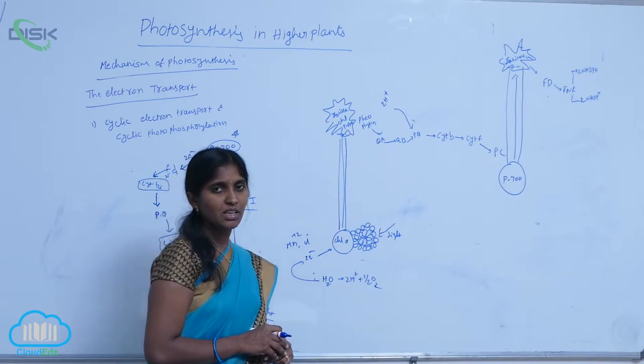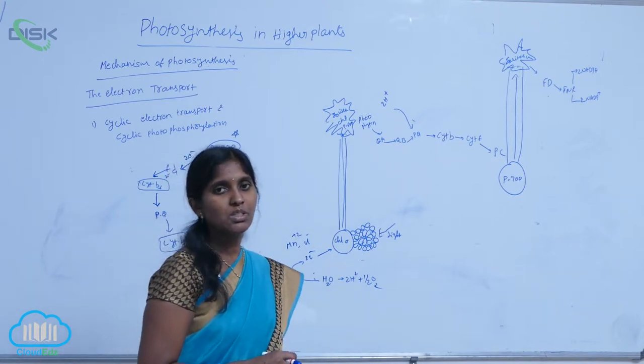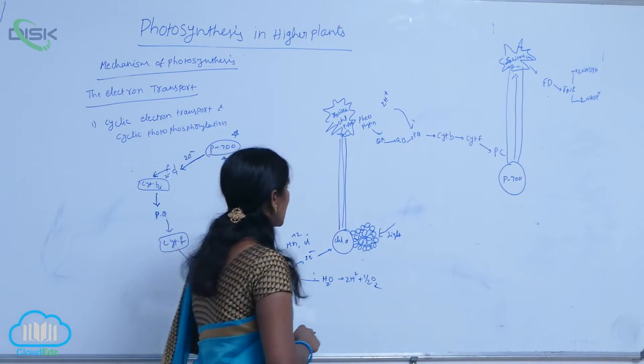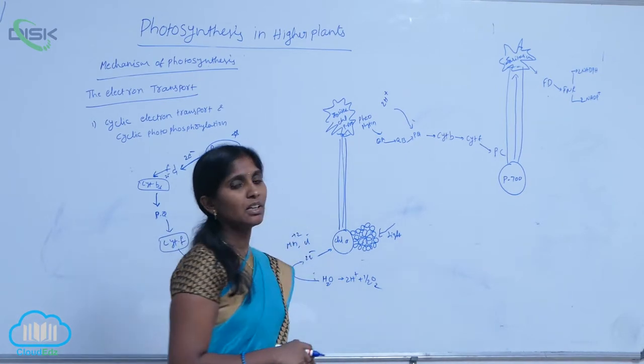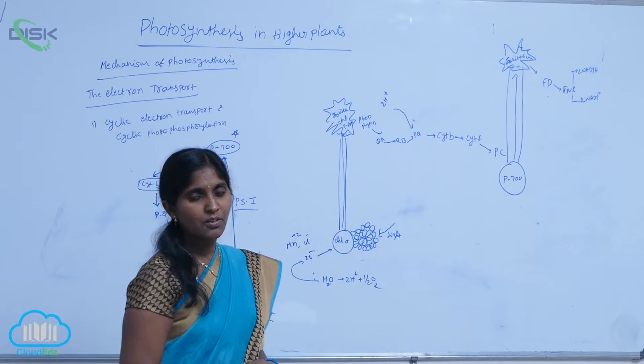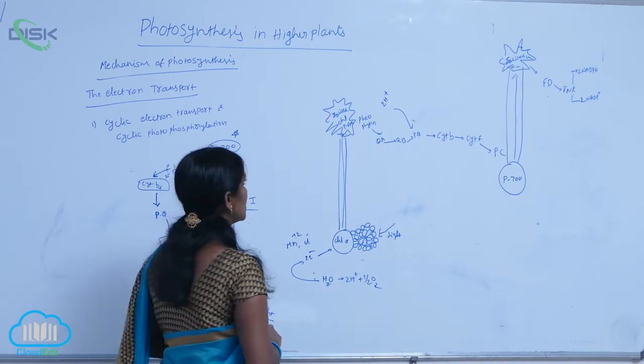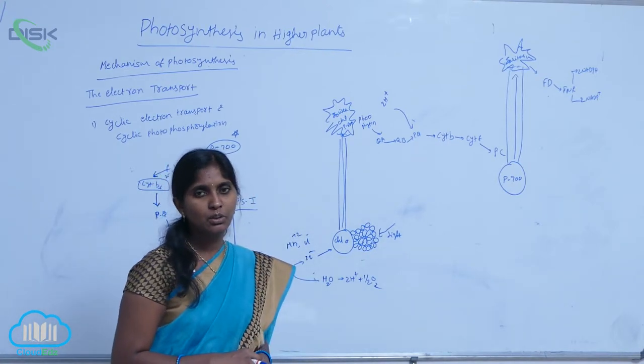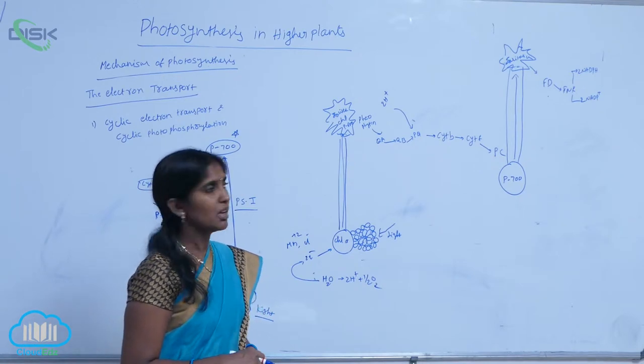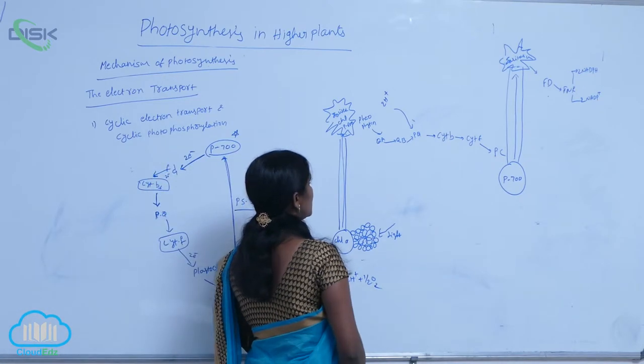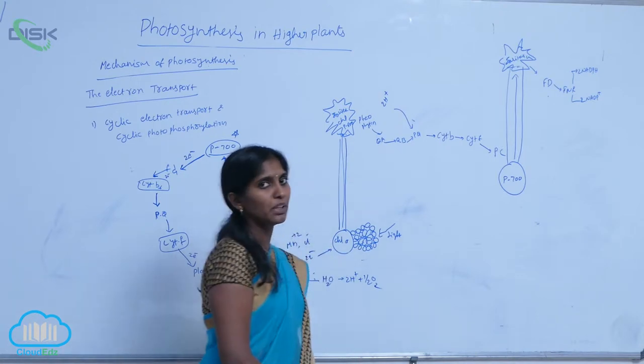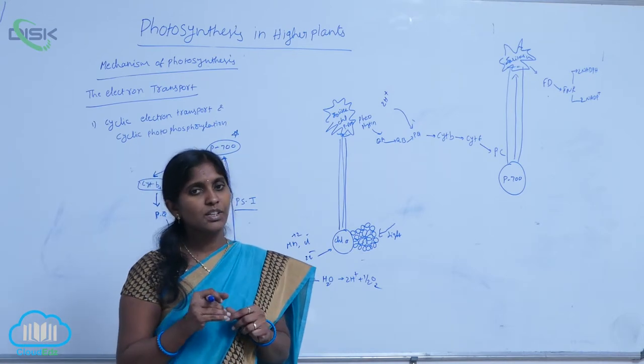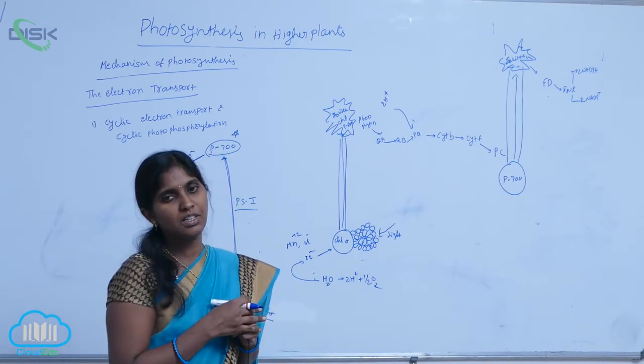While it is in excitation, it loses two electrons and gets oxidized. It transfers the electrons to the electron acceptor. The first primary electron acceptor is pheophytin, which is a colorless pigment. By taking two electrons, it is reduced. Then it gives electrons to cytochrome B. Here a series of oxidation as well as reduction reactions happen.